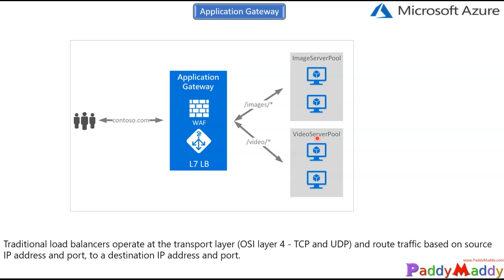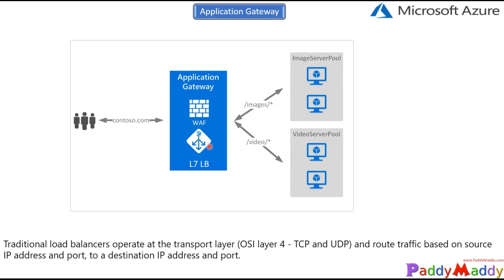A pool can contain multiple servers combined together. The key point is that whatever request comes in, Application Gateway understands it and forwards it to the right server pool, providing a good experience for end users. Traffic is fully routed to the appropriate pool — whether for images or videos — with an optimized experience for end users.